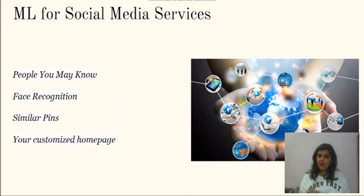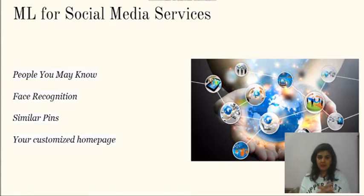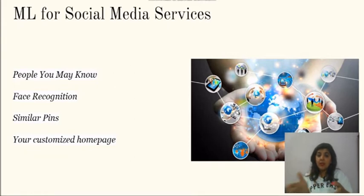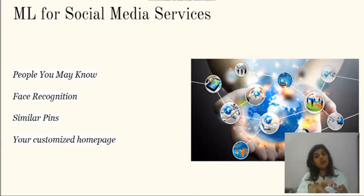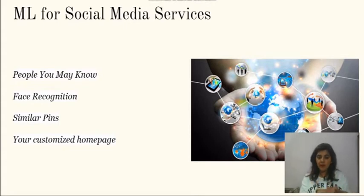One more example — we all use Facebook, Twitter, Instagram, and Netflix. On Facebook, you accept a certain set of people as friends, so Facebook gives you new friend suggestions or 'people you may know' based on machine learning — it studies your pattern. Similarly on Netflix, if you watch horror-type movies, it will suggest horror movies next time because it gets trained on your behavior.